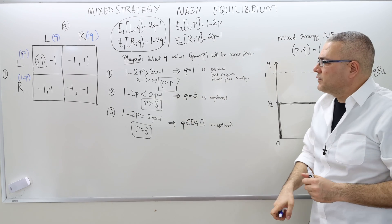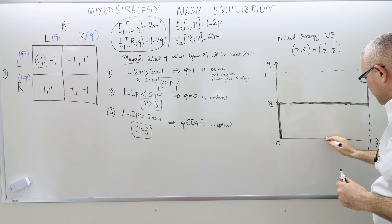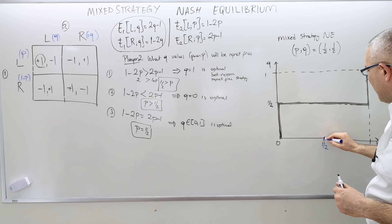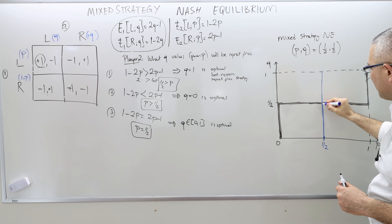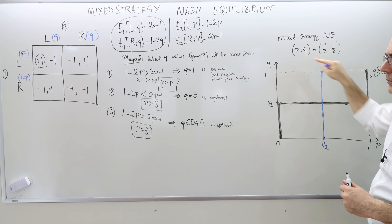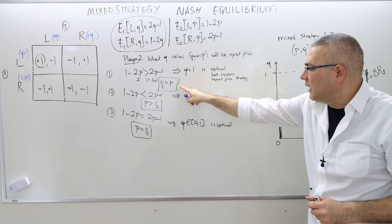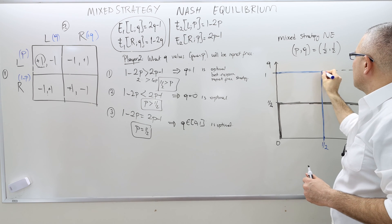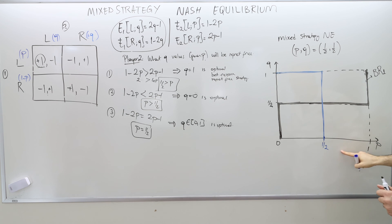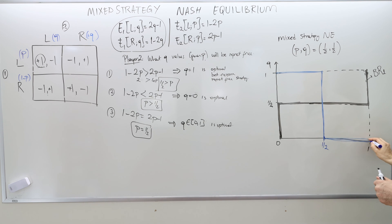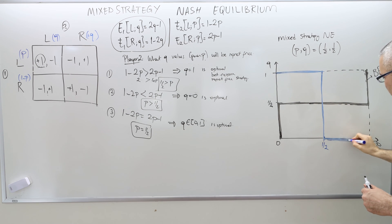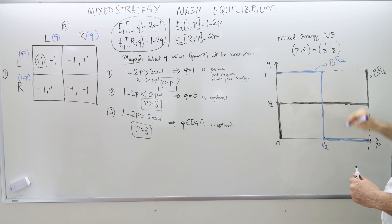This is the best response for player two — P equals one-half is the threshold. When P equals one-half, any Q is a best response, so I draw a vertical line. When P is less than one-half, Q must equal one. When P is greater than one-half, Q must equal zero. This gives me a blue step function, BR2, the best response function of player two.